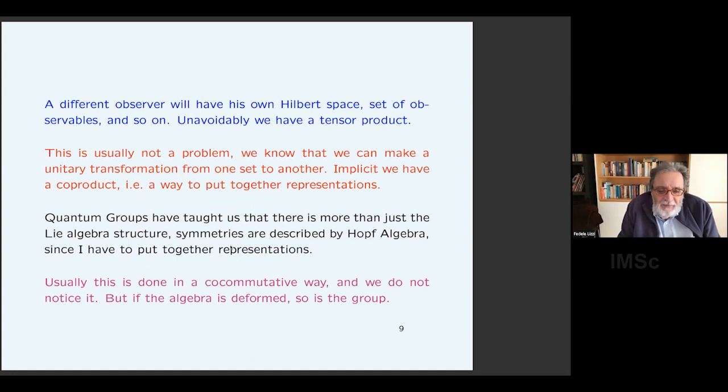If I have a different observer, he will have his own Hilbert space and they will have his own set of observable. So if I have observers, I have a tensor product. I have to put together representations. And there is a co-product in this way.